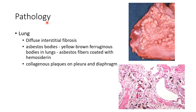Now let us see about the pathology of asbestosis. The lung shows diffuse interstitial fibrosis and asbestos bodies. Asbestos bodies are yellow-brown ferruginous bodies in the lung, which represent asbestos fibers coated with hemosiderin. As you can see in this picture, there is diffuse interstitial fibrosis, and these are the asbestos bodies — asbestos fibers coated with hemosiderin.